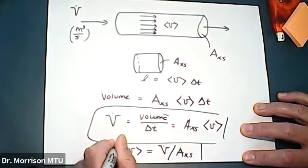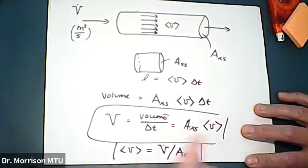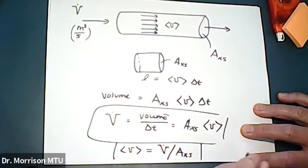That's a really useful relationship for steady turbulent flow because we often are able to measure the volumetric flow rate. We know the cross-sectional area and that allows us to get the average velocity.